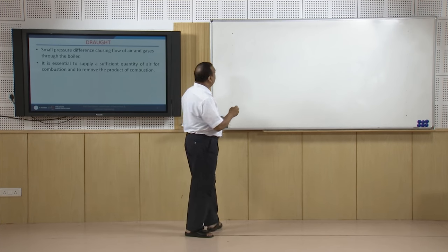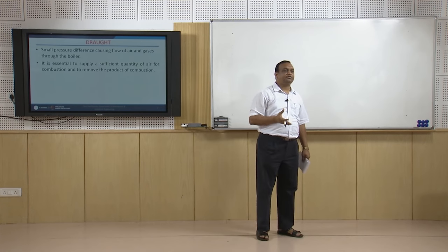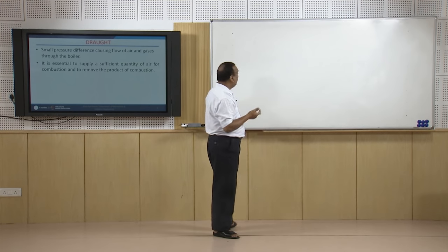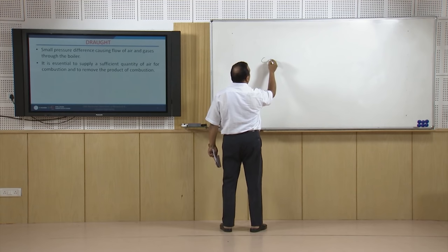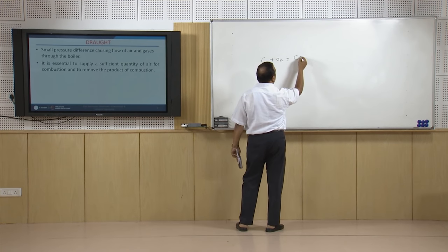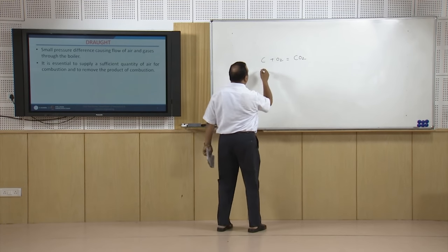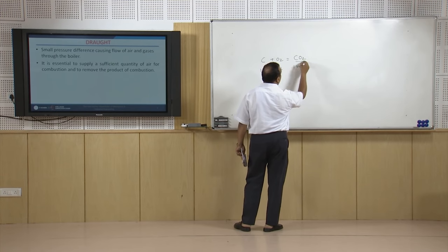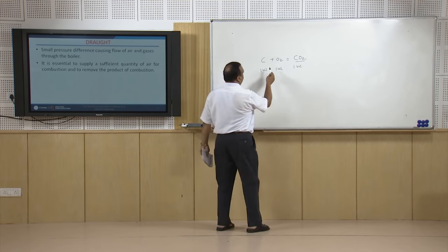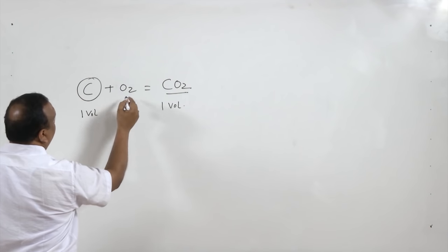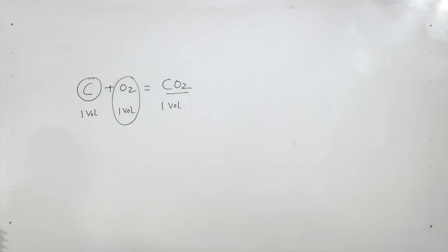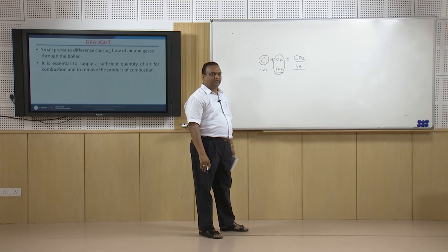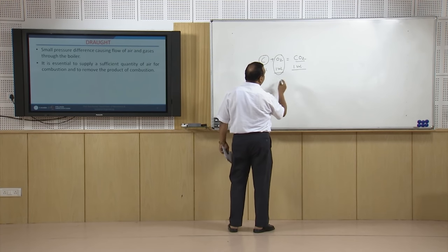Before calculations, let us understand the theory of combustion. In fuel, carbon constitutes approximately 78–85%. Carbon burns with oxygen to form CO₂: one volume of carbon plus one volume of oxygen gives one volume of CO₂. This means the volume of air is approximately equal to the volume of flue gases, since nitrogen does not participate in combustion. This equality of volumes holds when both are compared at the same temperature.